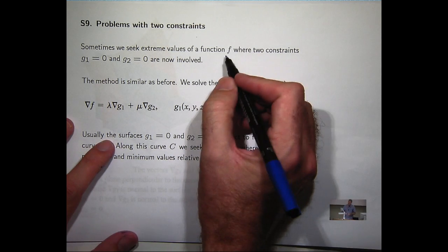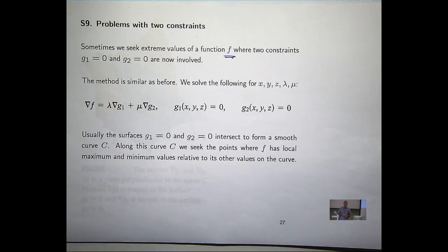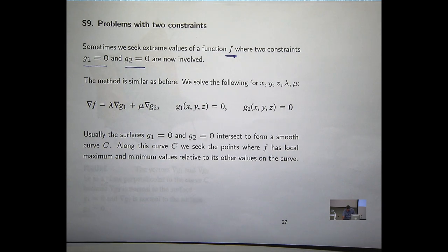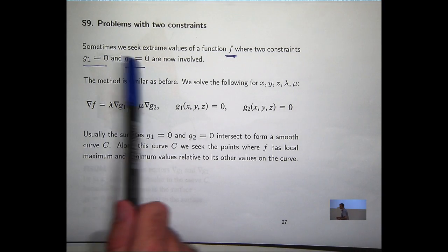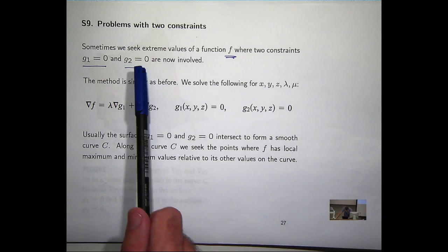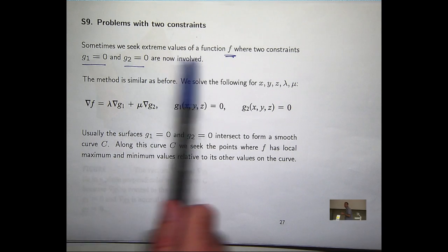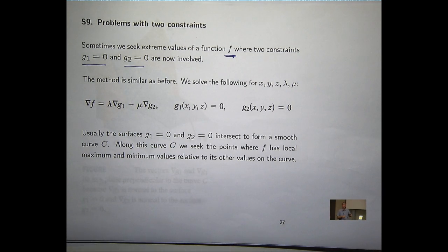You want to maximize or minimize some function f, and now you've got two constraints. So those constraints might be in the form of surfaces, and so g1 equals 0 and g2 equals 0, and those surfaces will intersect somewhere. What values on these surfaces maximize or minimize, or I guess on the intersection of these surfaces, they have to satisfy both equations. What values satisfy that and maximize or minimize f? That's the problem.